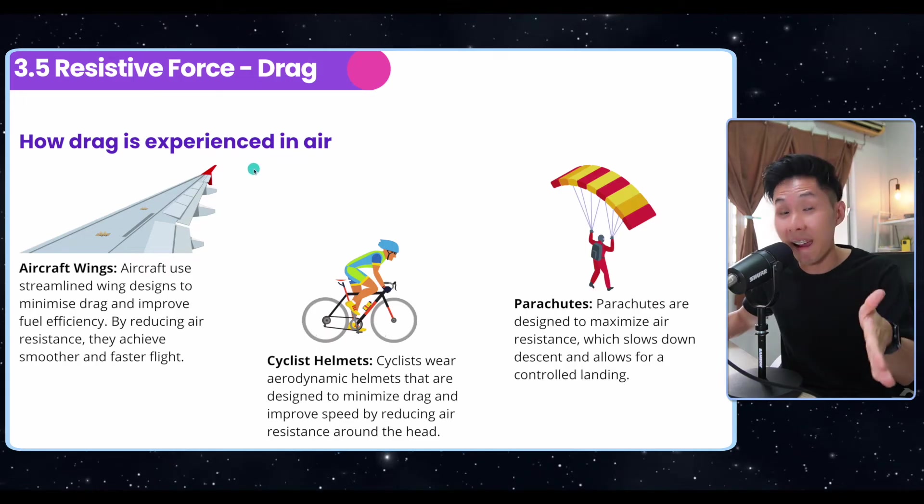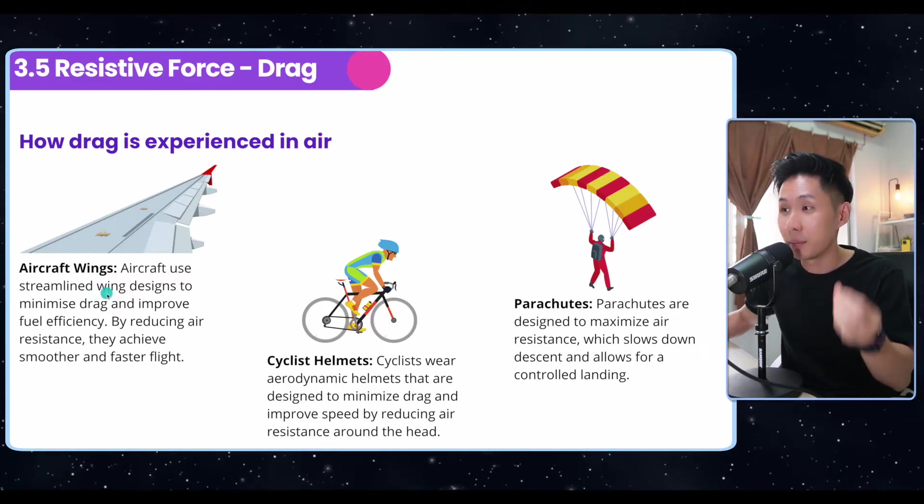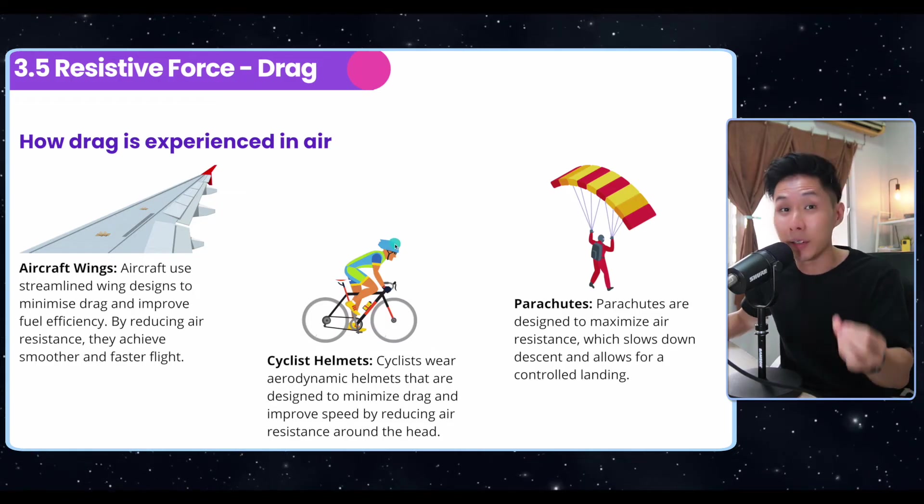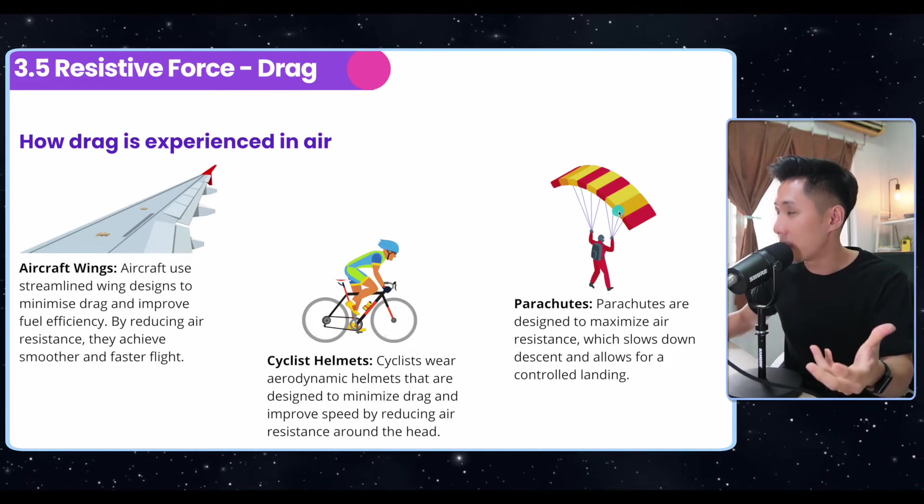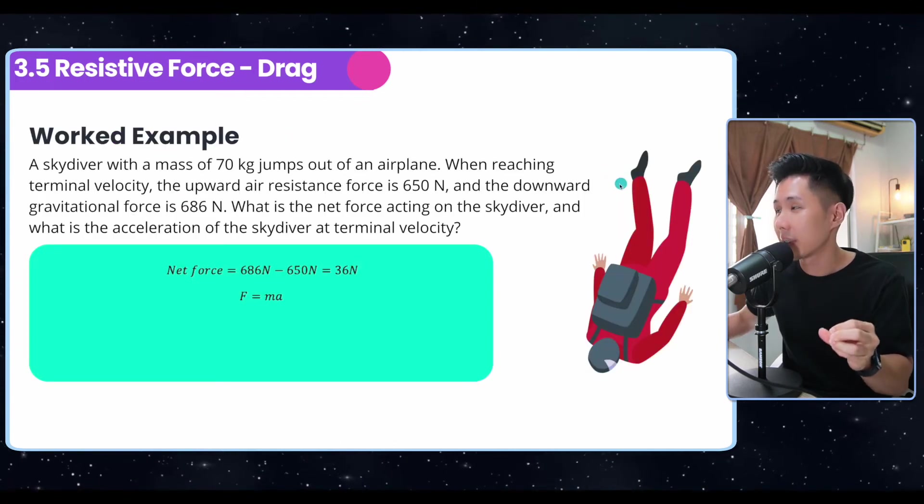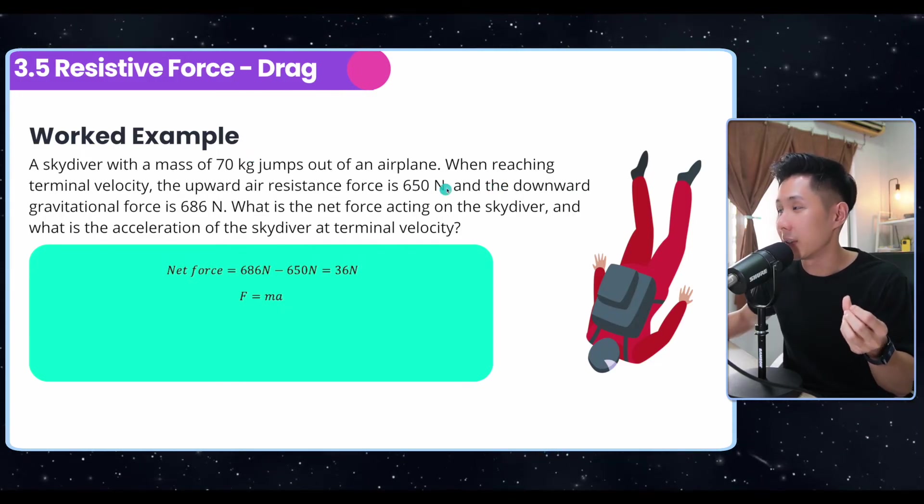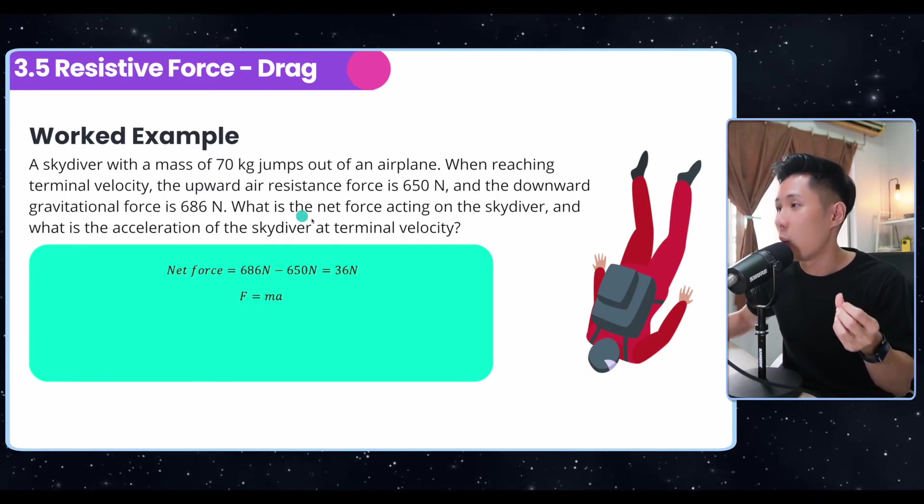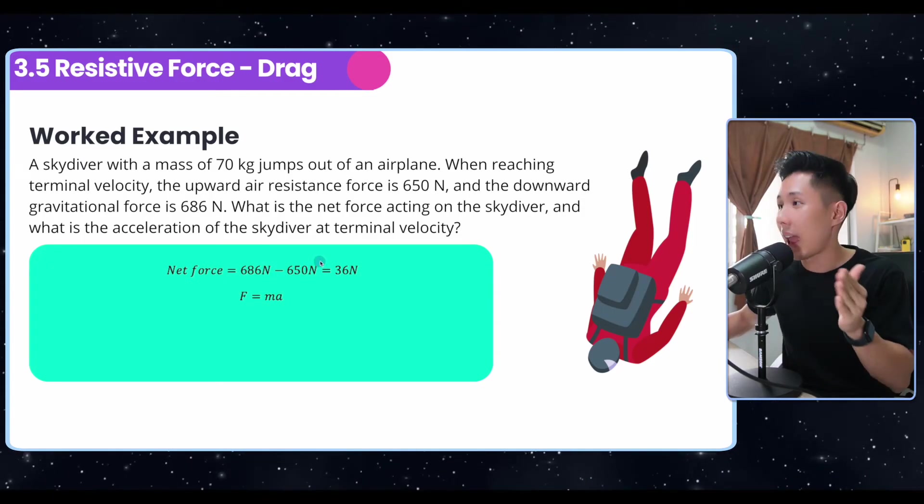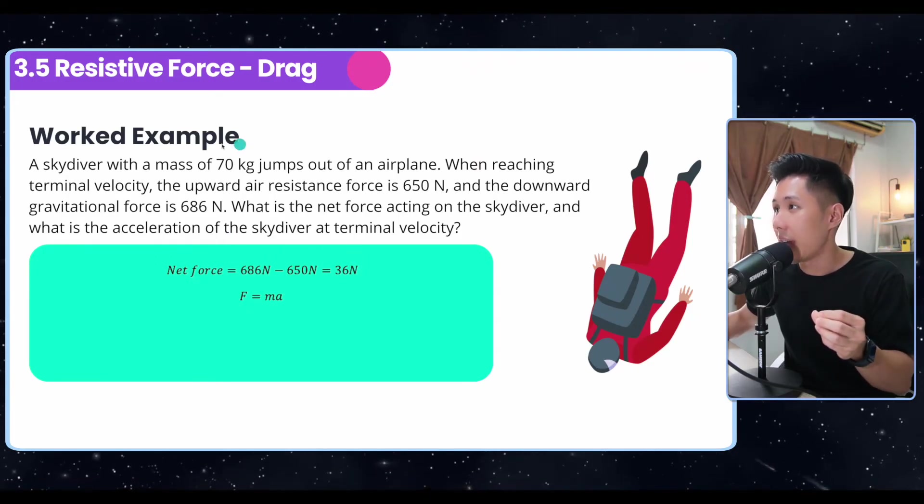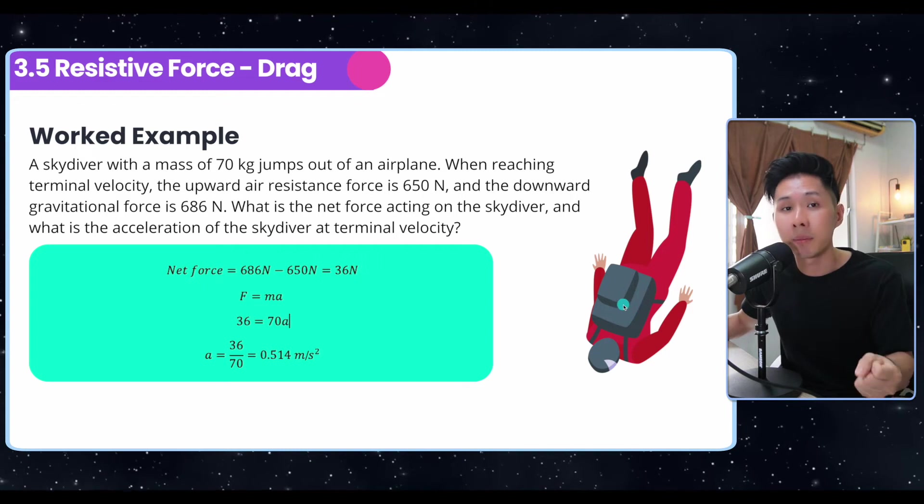Drag can also be experienced in air. We have air resistance. Aircraft wings are used to reduce the amount of air resistance and improve efficiency. A cyclist helmet is pretty aerodynamic to prevent air resistance from slowing the cyclist down. A parachute increases air resistance when opened. Let's solve some questions regarding force. This skydiver is 70 kg and experiences a resistive force of 650 Newtons. Gravity is this amount. What is the net force? We can calculate by subtracting two different forces because they are in different directions. To find the acceleration, use the force given and the mass and then find the unknown a. This combines multiple concepts to solve one question.